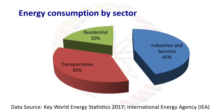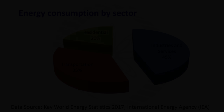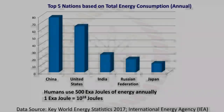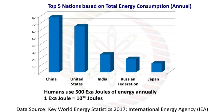Regarding energy poverty: 70% of people lack access to electricity, 38% lack access to clean cooking facilities, 95% of these people live in sub-Saharan Africa or Asia, and 80% of these are in rural areas.